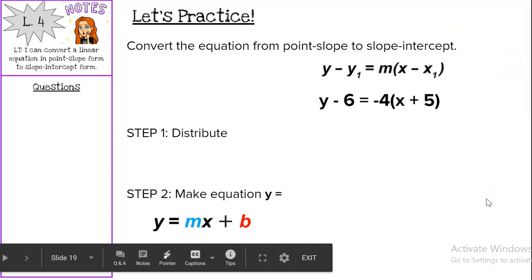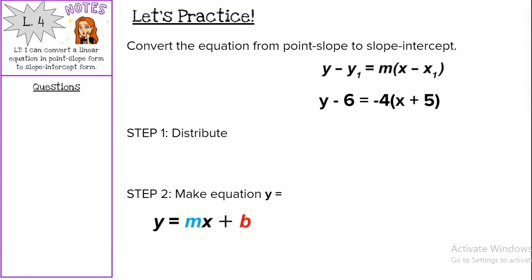So let's just jump right into our practice, convert the equation from point-slope to slope-intercept. The first thing we want to do, so we want to label what our m is, so if you see m, it's right here, so our m is negative 4.